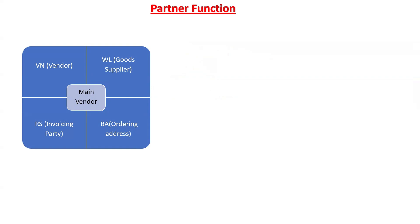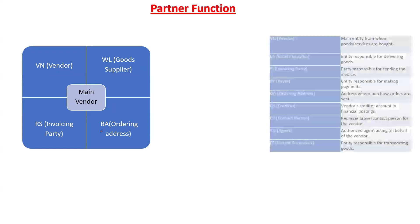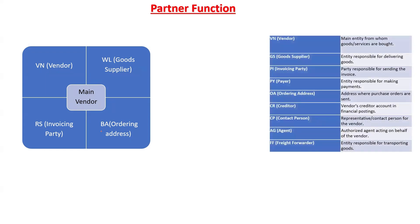In our example, suppose the Pune office is where we want to send the purchase order, and the Mumbai office is authorized for collecting invoices. In that case, we can create Pune as a BP for ordering address and Mumbai as an invoicing party. When we create a purchase order, these partner functions are linked to the main vendor. Each partner function carries a specific role. There are different types of partner functions available in the system, and you can create custom ones as well.